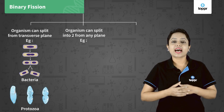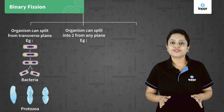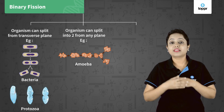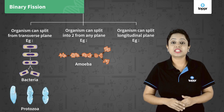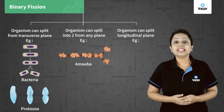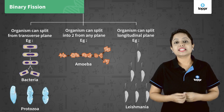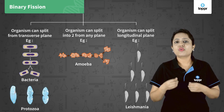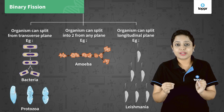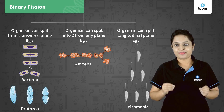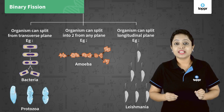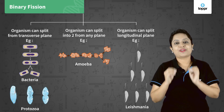Third, organisms can split longitudinally — for example, in leishmania, also known as kala azar. It is a protozoa that has a whip-like structure called flagellum at the end of its cell. Thus, to divide the cell into two equal halves, it has to divide longitudinally.